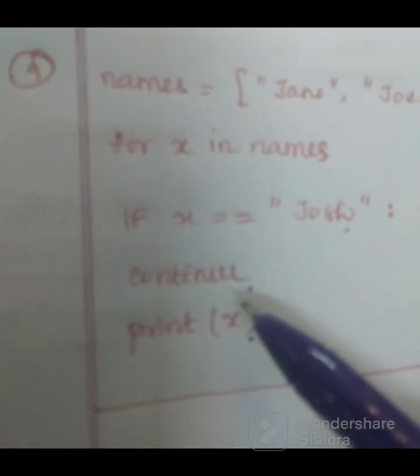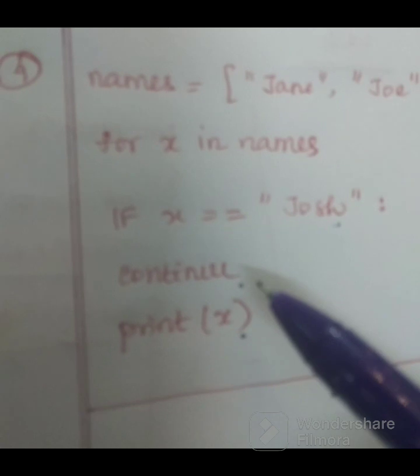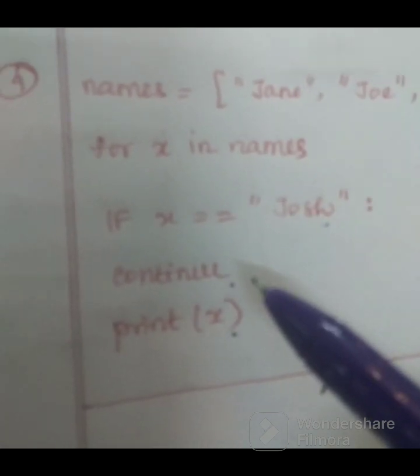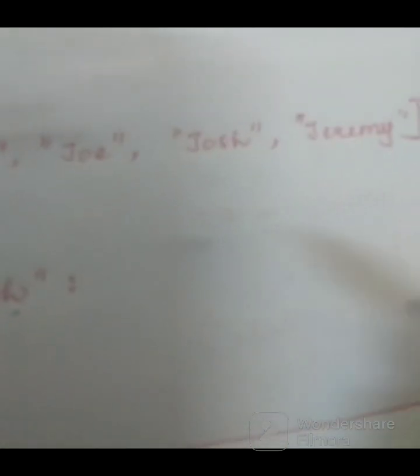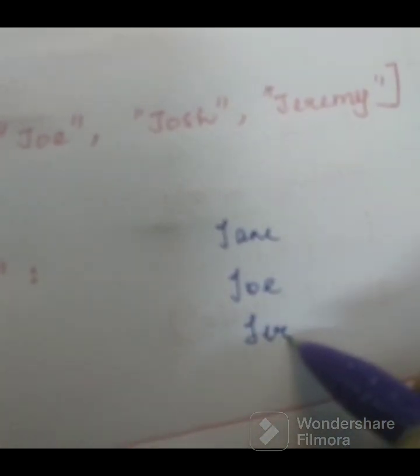Break means to stop. Continue is used to stop the current iteration and then continue with the next. So output is Jane, Joe, Jeremy.